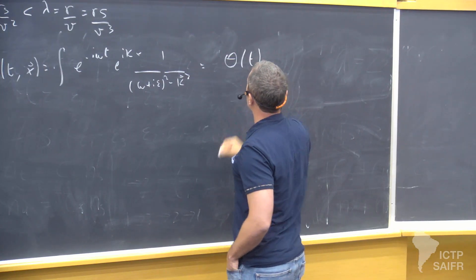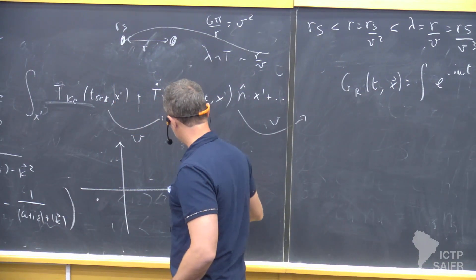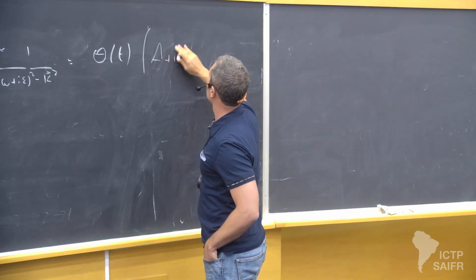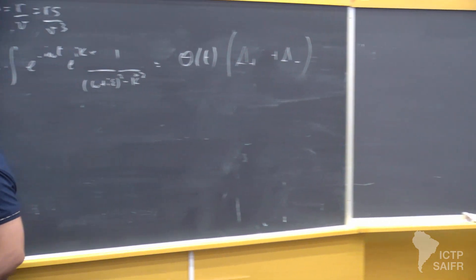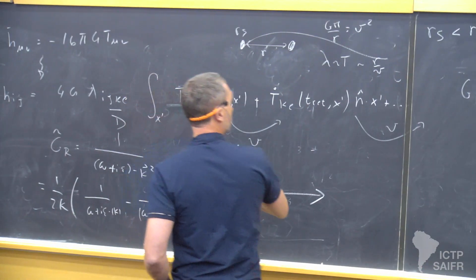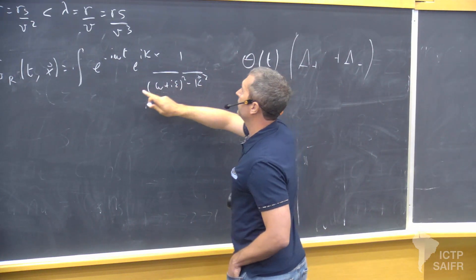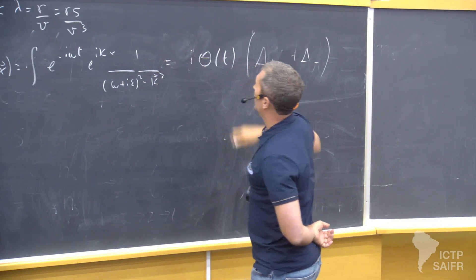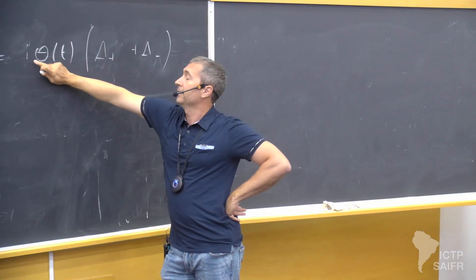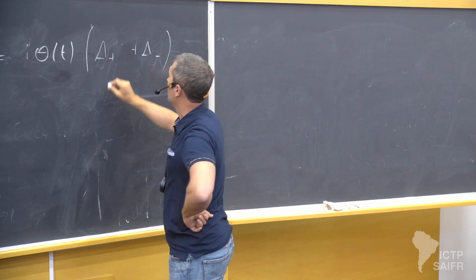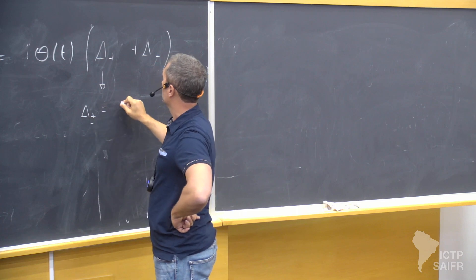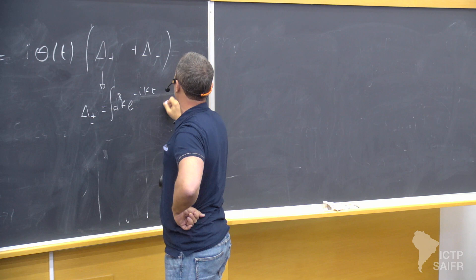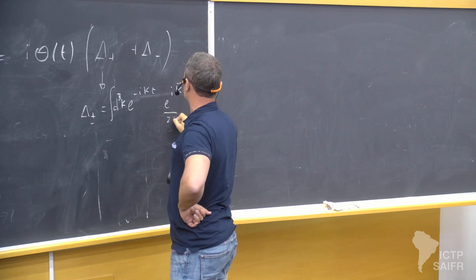Then the result, you understand that it must be proportional to theta of time. It's only when you close down that you pick the poles, and you pick both poles. The results come out this way: you just make the integration and pick this pole plus this pole. Then there is a 2 pi i, and for me the integral in omega and k is always d omega divided by 2 pi, d3k divided by (2 pi)^3, so the 2 pi of the residue theorem simplifies with the 2 pi in the measure. You're left with the i, and then delta plus and delta minus are just the standard Wightman functions, d3k e to the minus kt, e to the i k x.